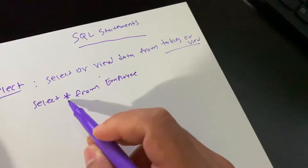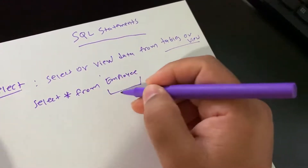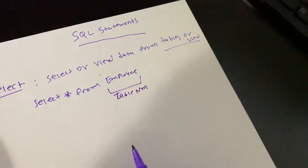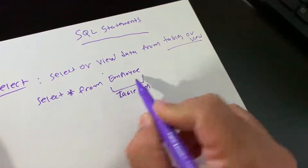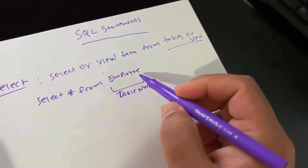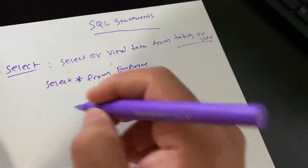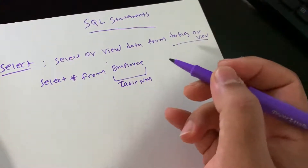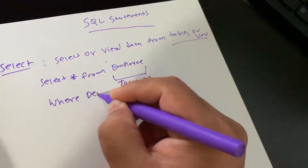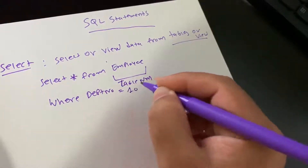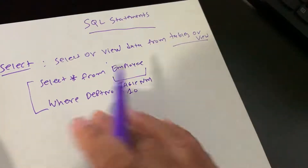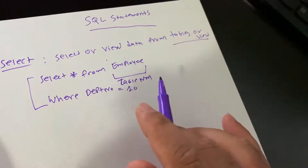SELECT * FROM table_name — you can replace table_name with your own table name. If you run this statement, you will get each and every record from the employee table. But if you have a condition, like you only want to see department number 10 employees, you can use a WHERE clause: SELECT * FROM employee WHERE department_number = 10. Then you will see only department 10 related records.